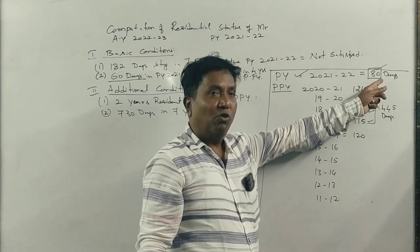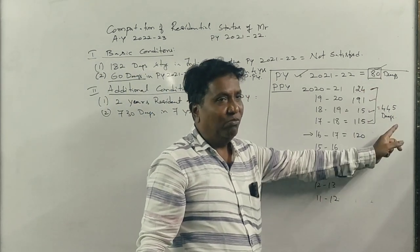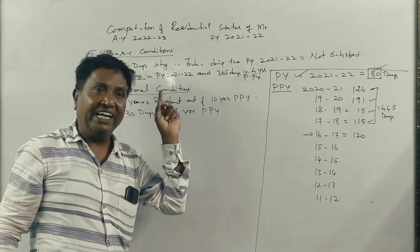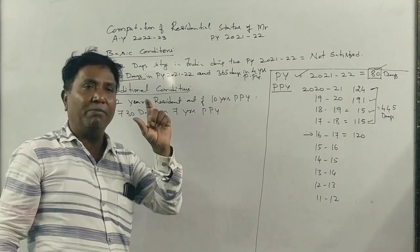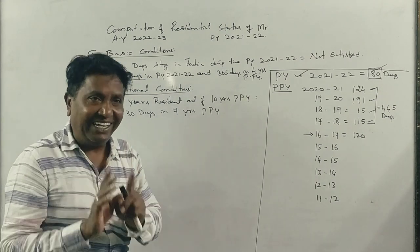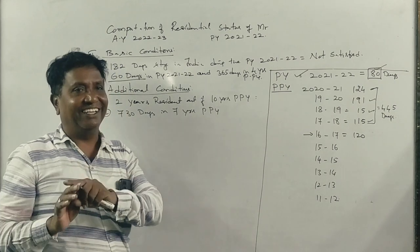That means he stayed for more than 60 days and more than 365 days, he satisfied the second basic condition, he becomes a resident. Now we have to check whether he is an ordinary resident or a not ordinary resident.